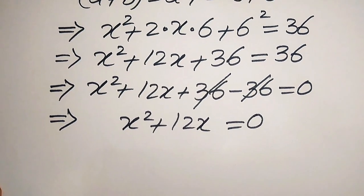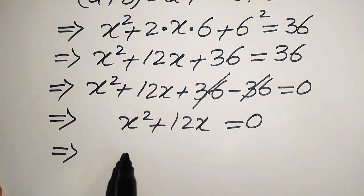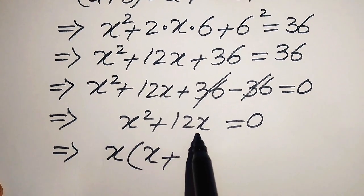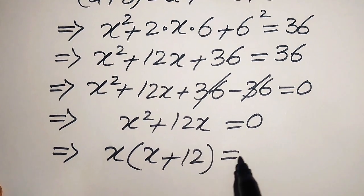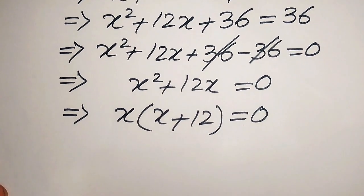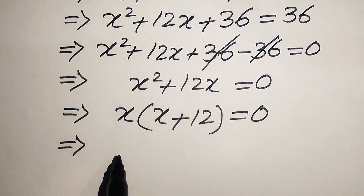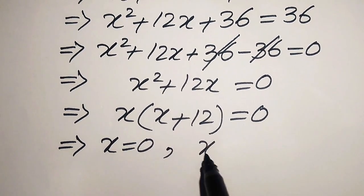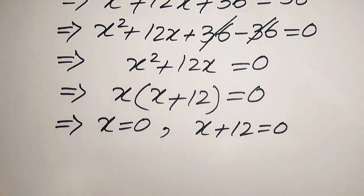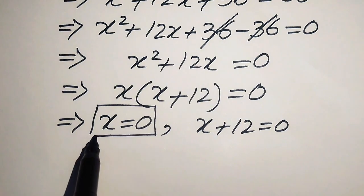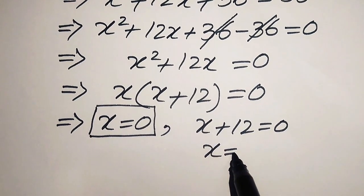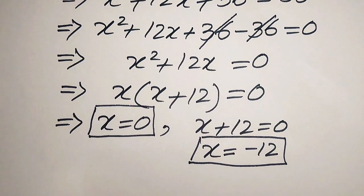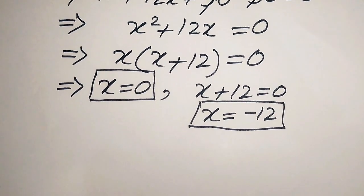Both terms involve x, so we factor out x: x(x + 12) = 0. This gives two cases: x = 0 is the first solution, and x + 12 = 0 gives x = -12 as the second solution. From both methods we get the same solutions for the given equation.